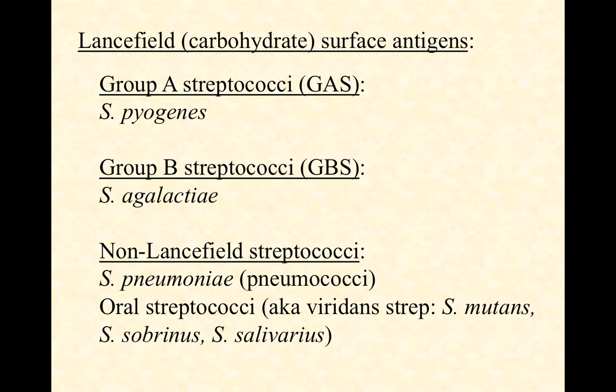Years ago, a woman named Lancefield came up with a system for grouping at least a couple of the major types of streptococci based on surface antigens — carbohydrates on the surface that she could bind specific antibodies to. When the antibodies would bind, they'd light up a certain color. We still use this system in the lab, as immunodetection is a very quick way to identify different types of organisms.